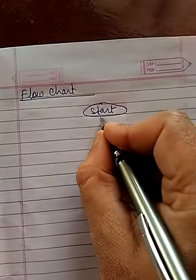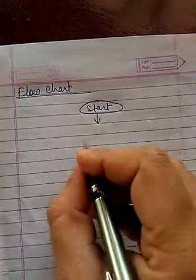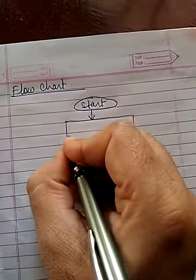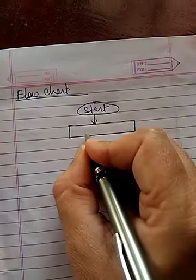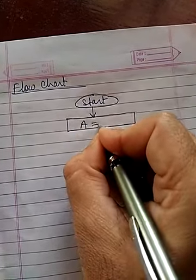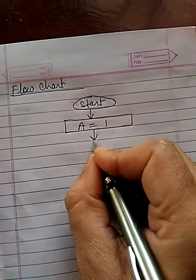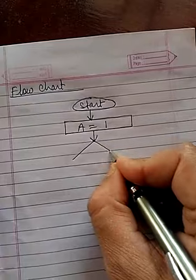Start. After that, we are using processing box. In which we are initializing a variable by 1. After that, we are checking the condition.